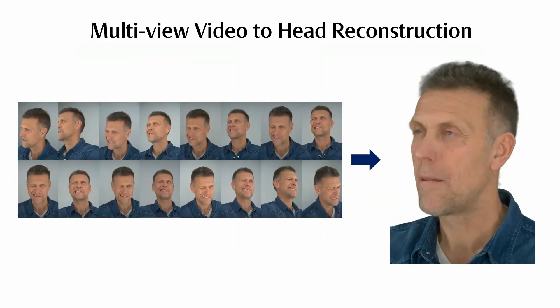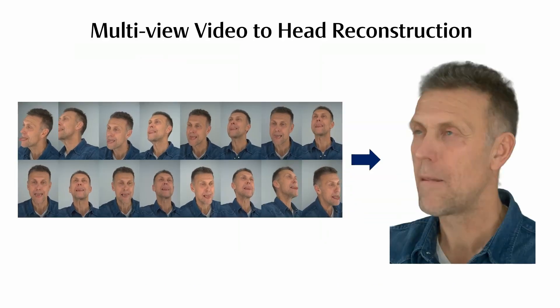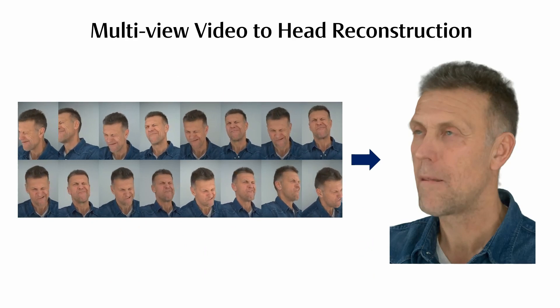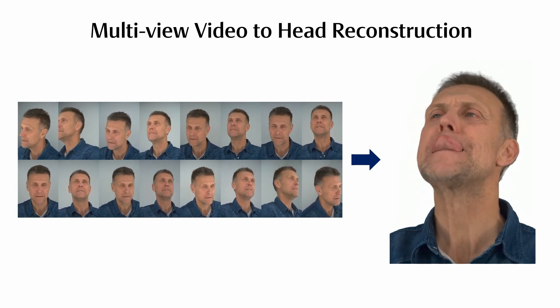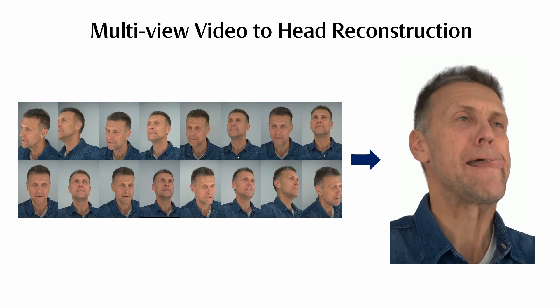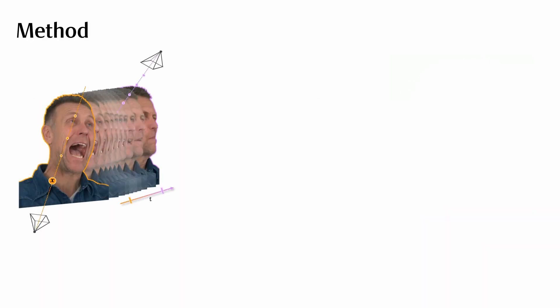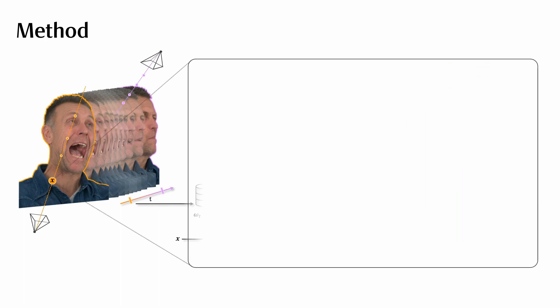Given multi-view video recordings of a person, our goal is to reconstruct a spatiotemporal radiance field from which we can re-render the sequence from arbitrary viewpoints. To learn a high-quality scene representation, we adopt the volumetric rendering formulation of NIRF. For each sample along a camera ray in observed space, we transform its coordinates into canonical space using a deformation field.